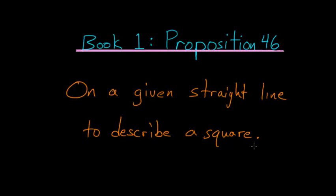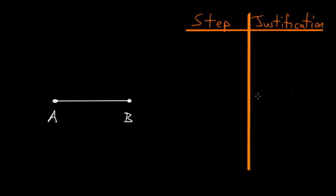For Book 1, Proposition 46 of Euclid's Elements: on a given straight line, to describe a square. With this proposition, we are given some line — in this case, the line AB — and on it we need to construct a square. To do this, let's first use Book 1, Proposition 11, which allows us to construct a line.